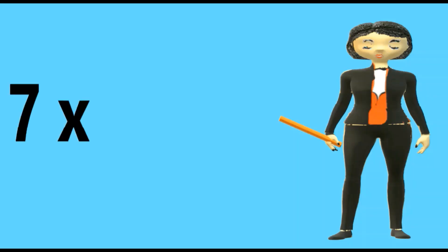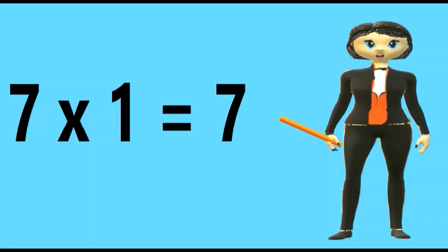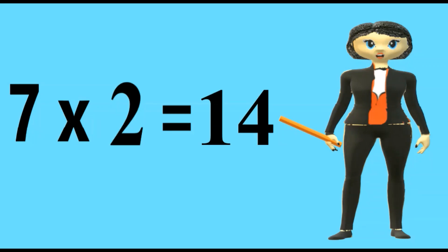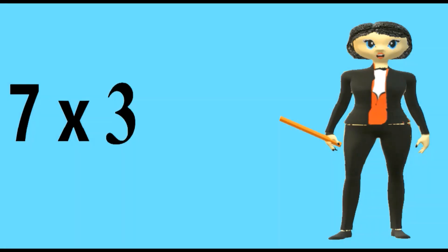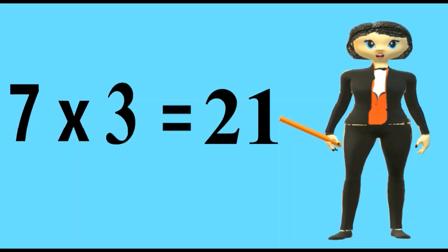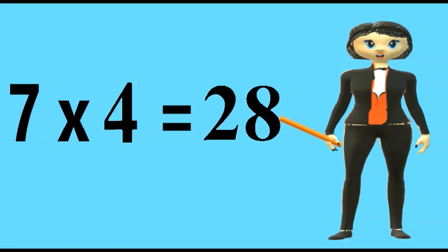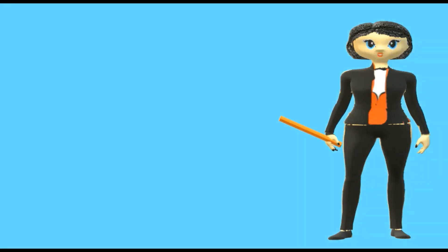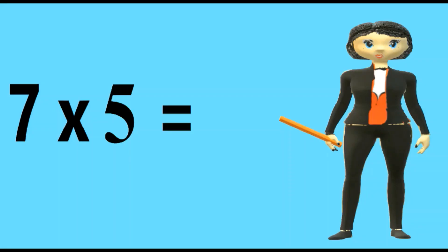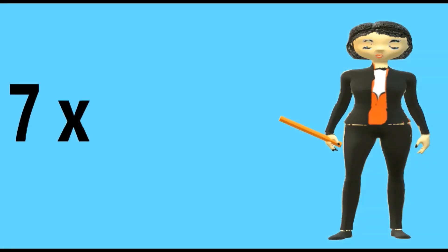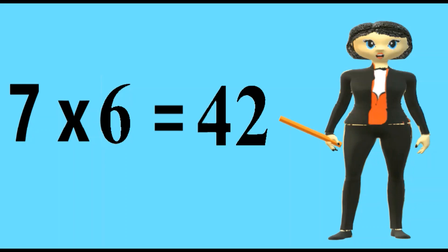Seven ones are seven. Seven twos are fourteen. Seven threes are twenty-one. Seven fours are twenty-eight. Seven fives are thirty-five. Seven sixes are forty-two.